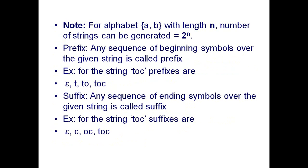Welcome back. In the last class, we covered what is an alphabet, what is a string, and how to find the length of a string. These are all basics about formal language and automata theory. We also covered one important formula: if an alphabet contains two symbols, you use two to the power n, where n is the length of the string.